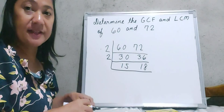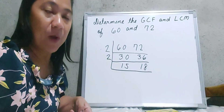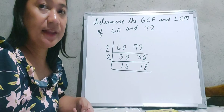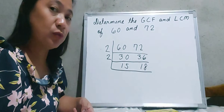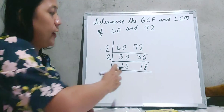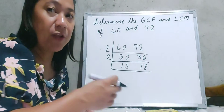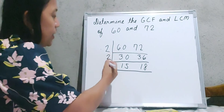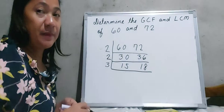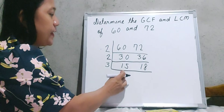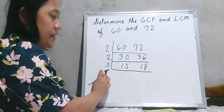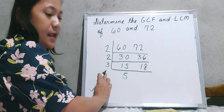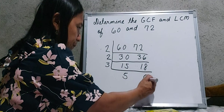The next thing we should do is find a prime number divisible by both 15 and 18. Since 2 is not divisible by 15, we move to the prime number 3. So 3 is our divisor: 15 divided by 3 is equal to 5 and 18 divided by 3 is equal to 6.